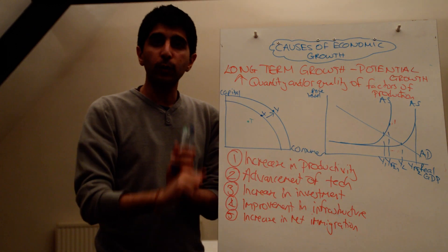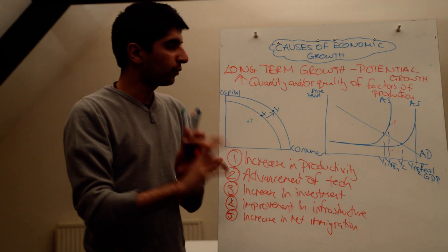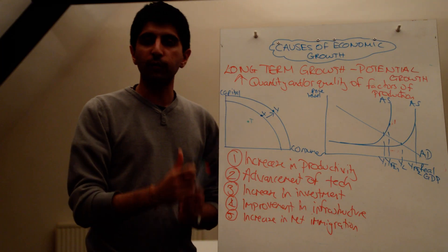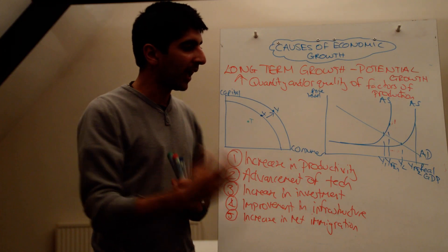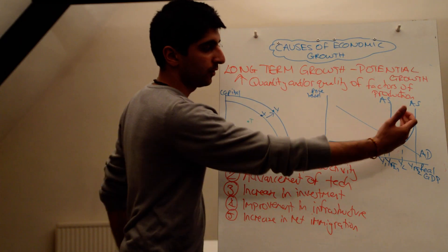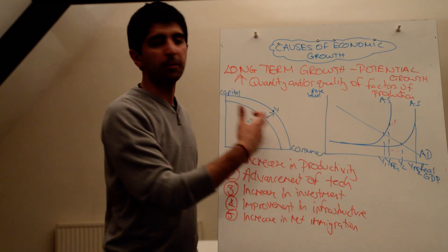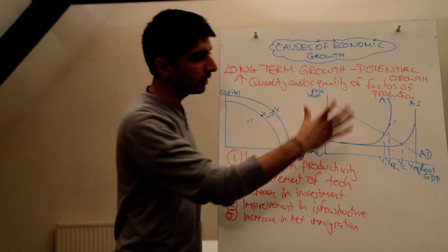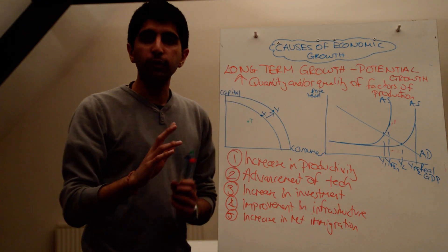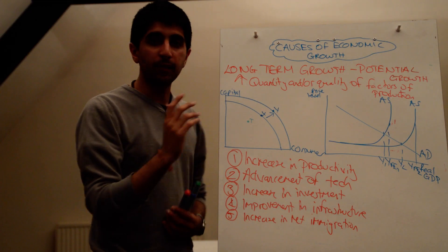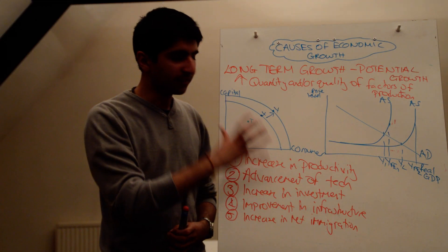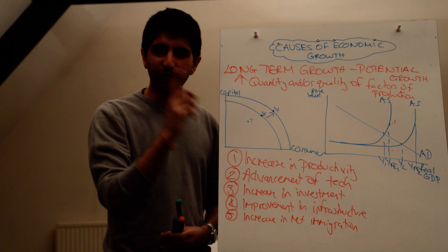To summarise: you've got short-term growth when aggregate demand goes up, and you've also got long-term growth when the quantity and quality of our factors of production increase. When that happens, aggregate supply shifts to the right — it increases — which is also a shift to the PPC outwards. There are two different types of economic growth and two different types of causes. You need to know them both: actual and potential. Very important video — learn it well.